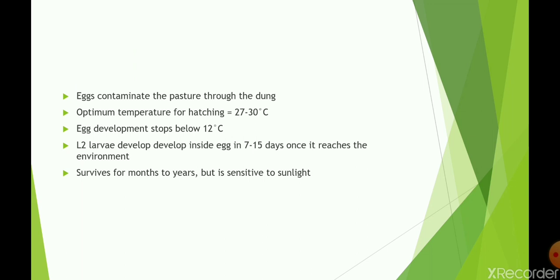Regarding pasture contamination: eggs contaminate the pasture through feces. The optimum temperature for hatching is 27 to 30 degrees Celsius. Below 12 degrees Celsius, egg development stops. Once eggs reach the environment, delta larvae develop inside the egg in 7 to 15 days. These eggs can survive for months to even years, but are sensitive to direct sunlight.